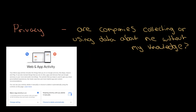You are giving Google your search terms — all the things you have searched for and visited are being uploaded to Google. If you look at their web activity settings, it tells you the benefits: a more personalized experience, faster searches, and so on. But one of the main reasons this is done is so that things can be advertised to you specifically.